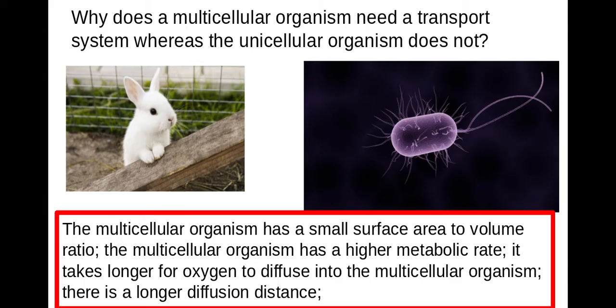It'll take a lot longer for the oxygen to diffuse in to the multicellular organisms as well. And this is because they have a longer diffusion distance in order for the oxygen to get into these cells here in the middle of the rabbit, where the diffusion distance on this one here is going to be a lot smaller. Because it only needs to diffuse very short to get into the middle of that bacteria.